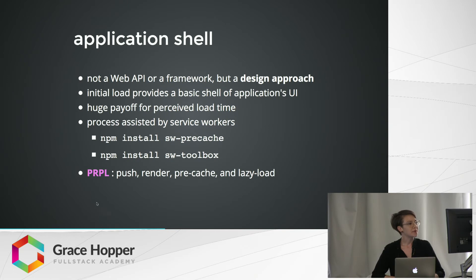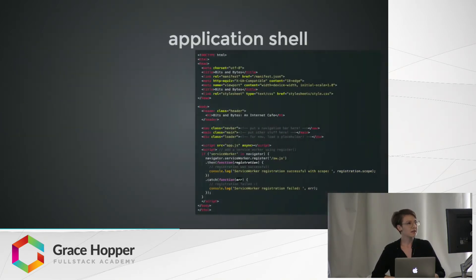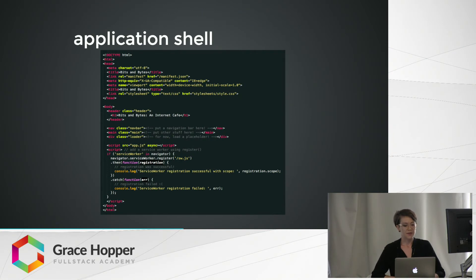This approach has been described as the purple pattern — it follows an order of operations of push, render, precaching, and lazy loading. Here's a snippet of what an app shell might look like. As you can see, there's a link to the manifest at the top, some basic features to render in the body of the page, and a service worker that gets registered towards the bottom.